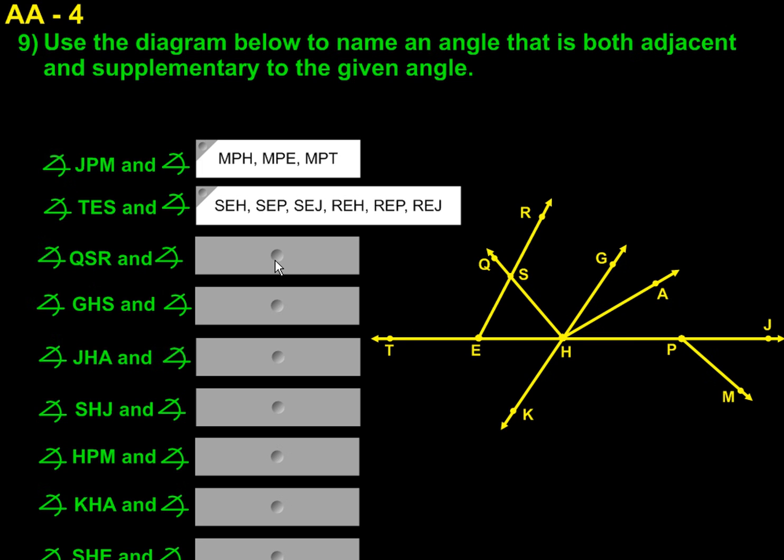Next, we have QSR. And what would work with that? We have RSH. That would enable the 180 degrees to form on this line. Or we have QSE, which would enable the 180 degrees to come from this side.